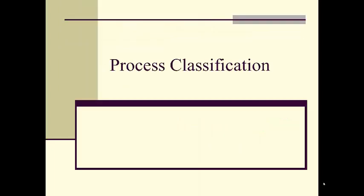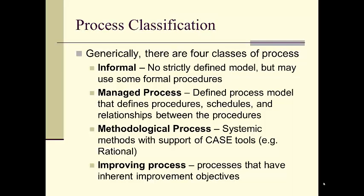Let's look at four classes of process so we can learn to classify the different processes we might be using in an organization. Generically, there are four classes: informal — no strictly defined model, but you may have some formal procedures; managed process — a defined process model that defines procedures, schedules, and relationships; methodological process — systemic methods with the support of CASE tools, for example the Rational Unified Process; and improving processes — processes that have inherent improvement objectives.